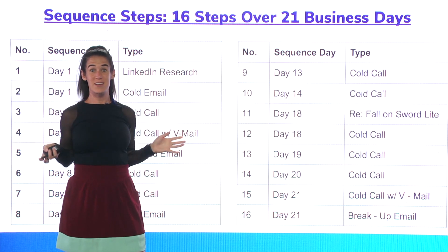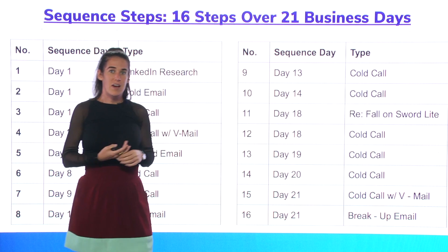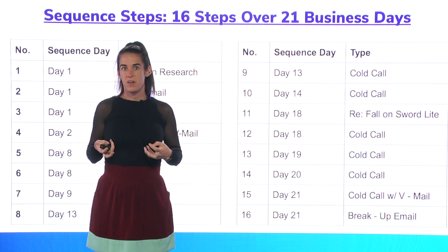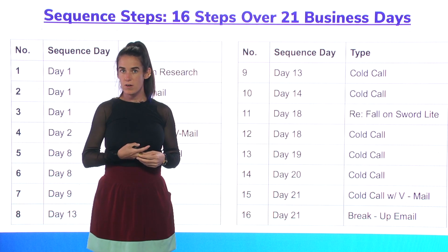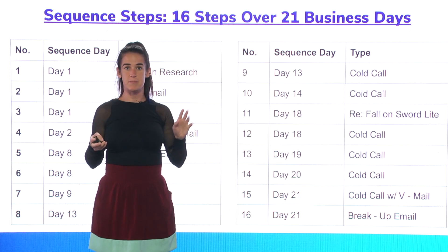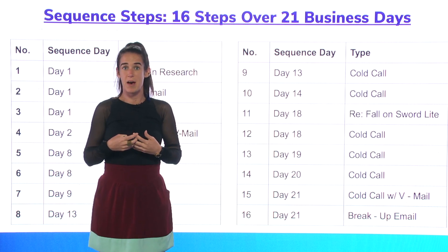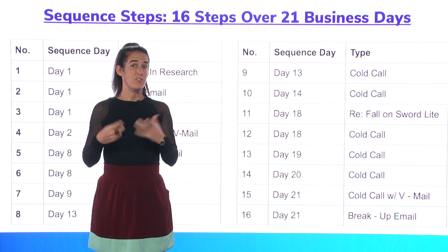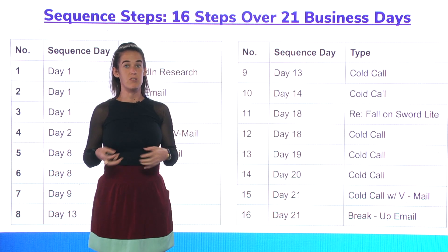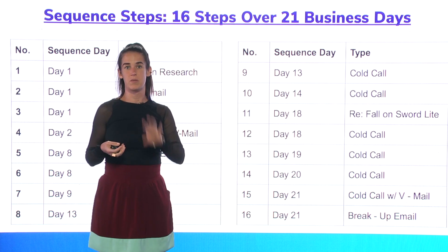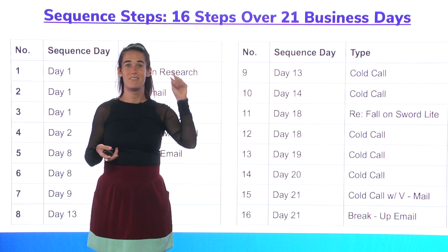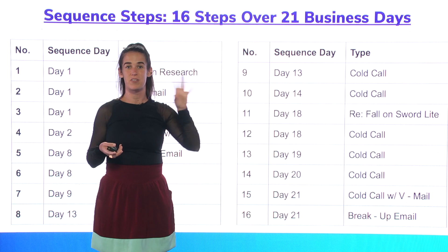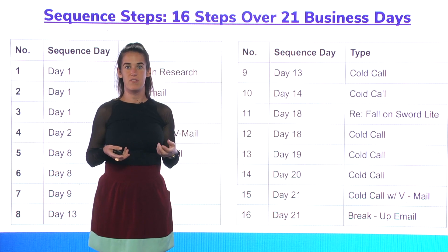A lot of reps ask: 'Is this too aggressive? What if I overwhelm my prospect?' In my experience across four teams, when we were personalized, people weren't mad even if we were aggressive in the amount of outreach. If you don't know who the person is and haven't done your research, that's where prospects get really mad. General rule: if you've done research and can state three facts about them, they typically won't get mad at you even if you're doing quite a bit of outreach.